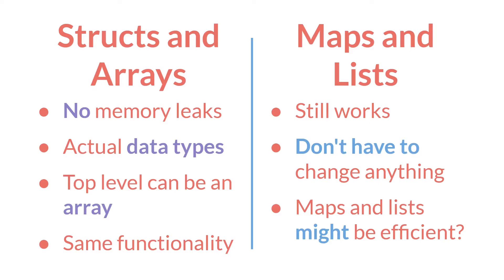Second, and this is a big one for me, structs and arrays are actual data types. You no longer have to go through, as you did with maps and lists, and tell GameMaker what your data types are. GameMaker already knows that structs and arrays are structs and arrays, and you can check those data types with isStruct and isArray. Version 2.31 did add a couple of functions for maps and lists that help with this a little bit, but it's still more work.